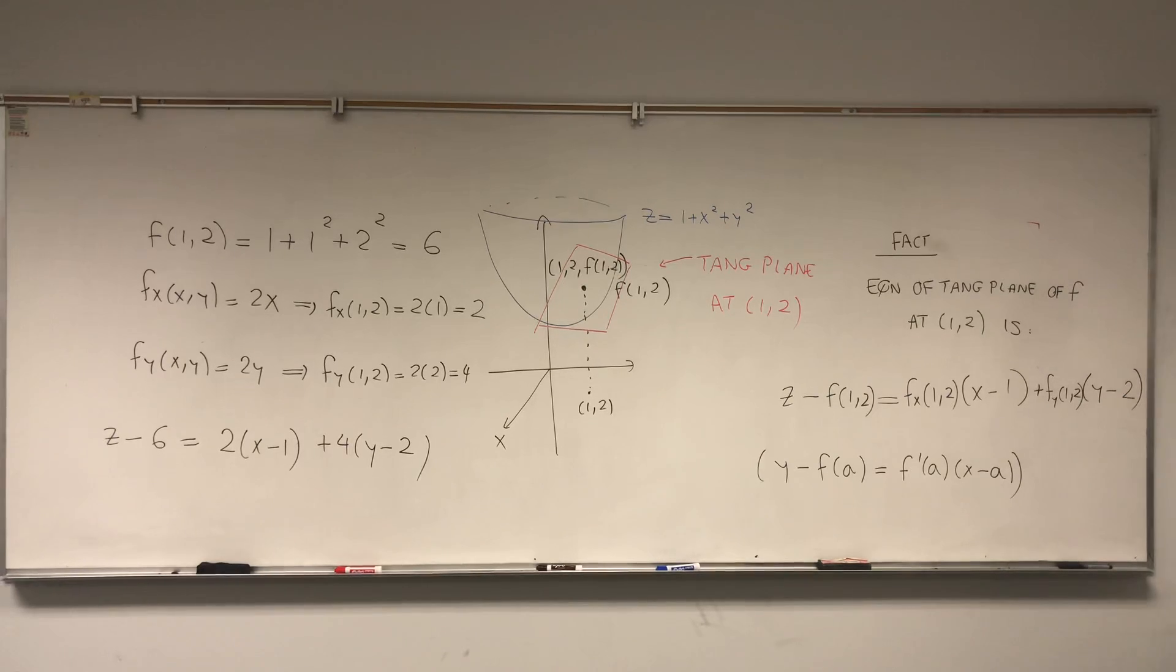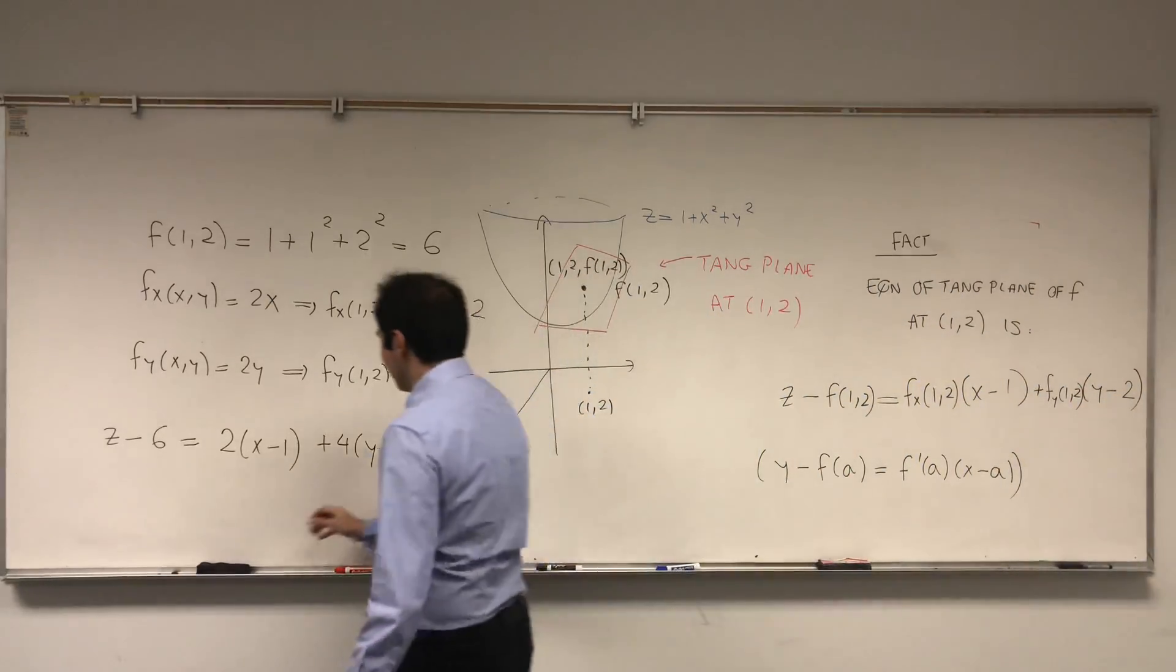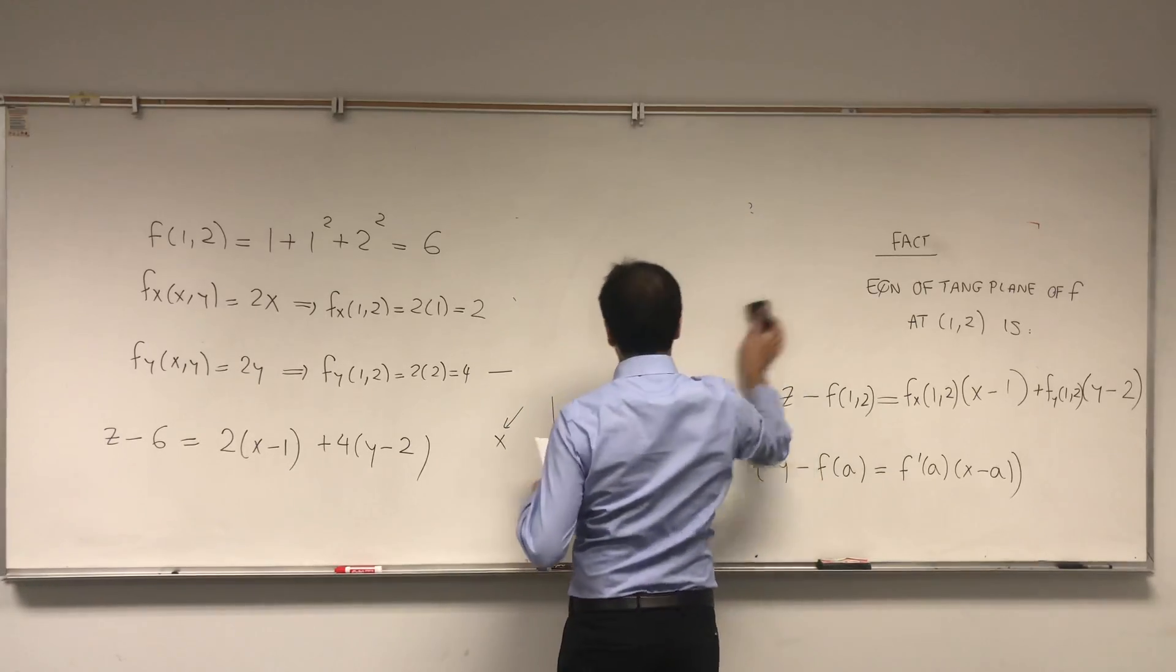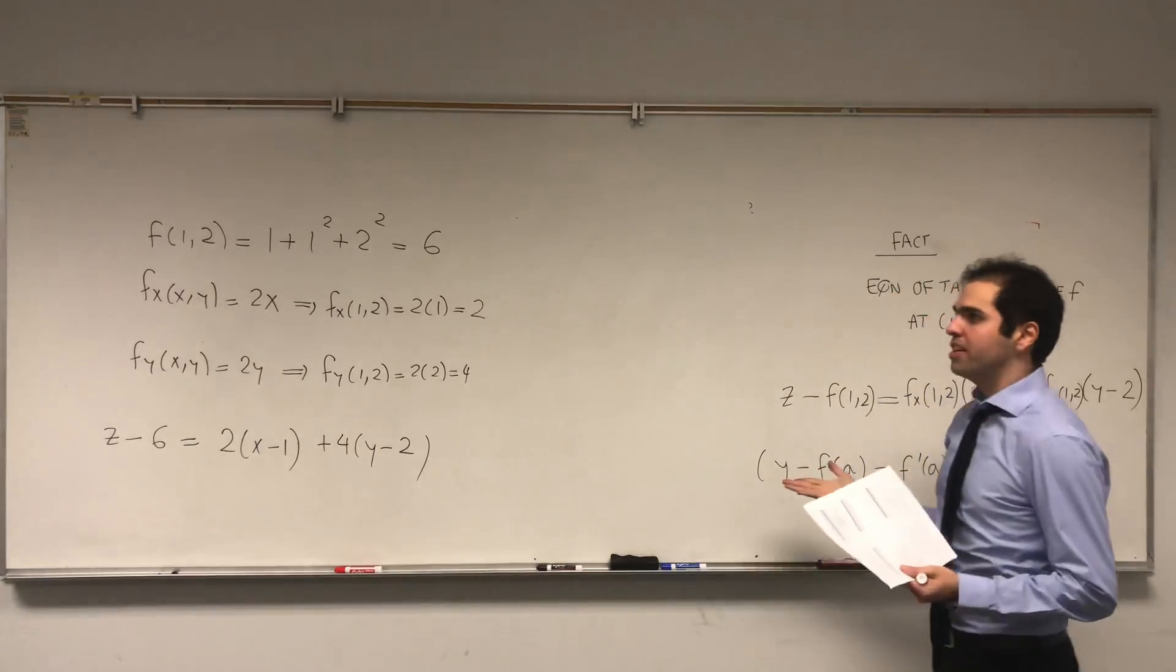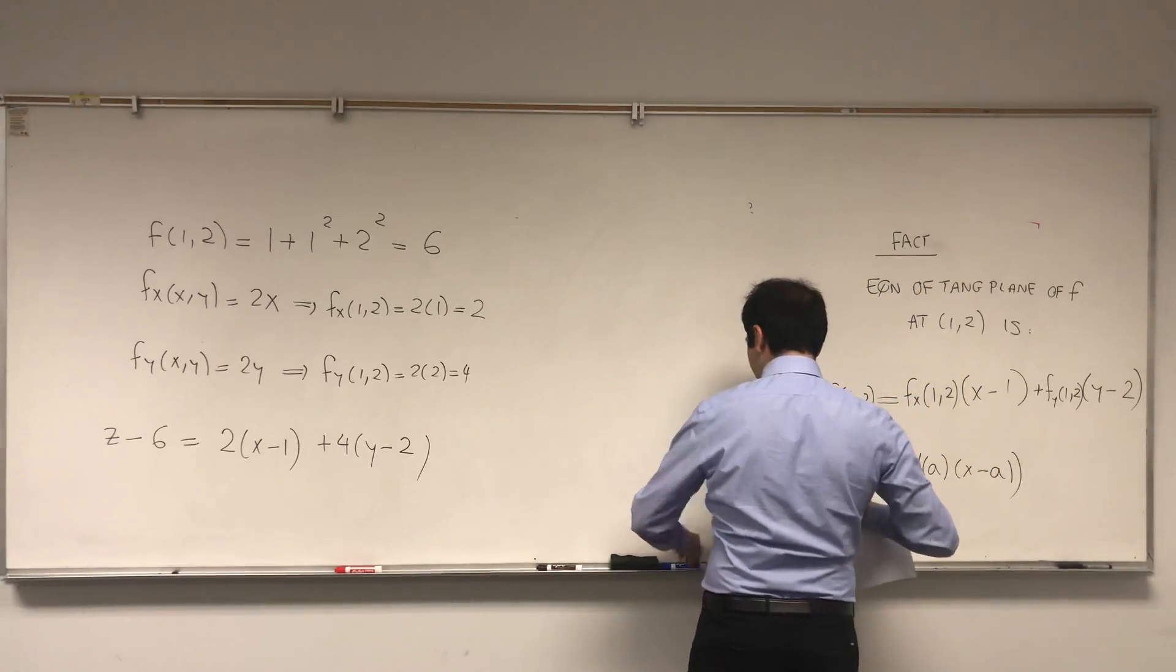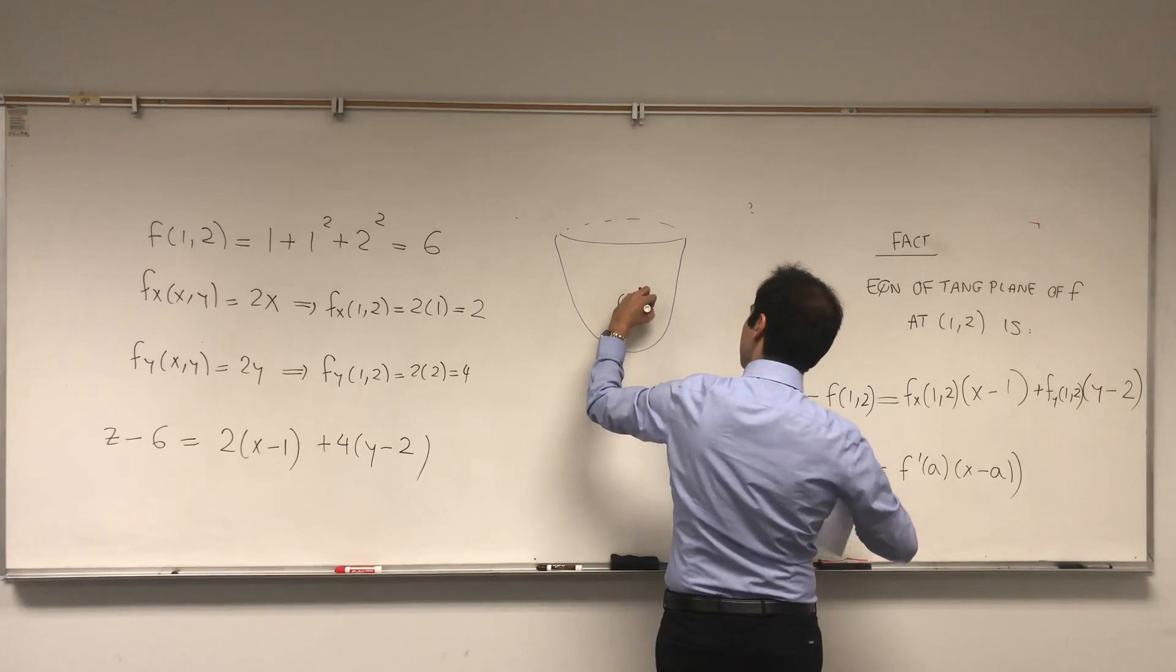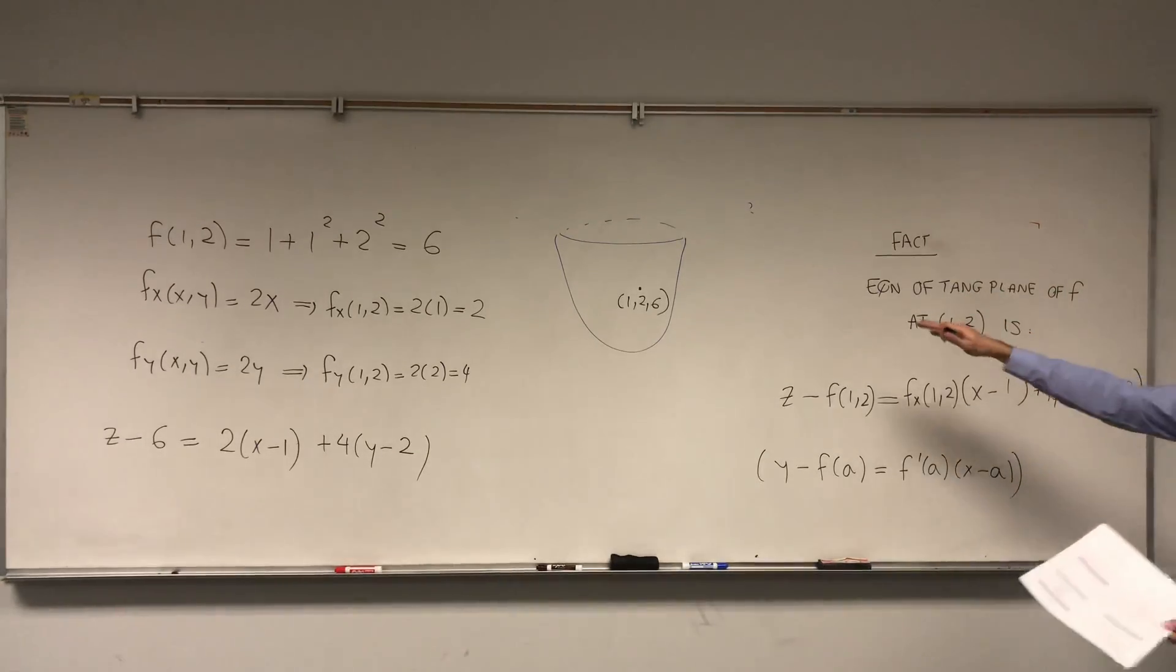So this is how to find the equation of the tangent plane. And now let's just figure out roughly why this is true. I think intuitively it makes sense because remember, we have this interpretation of fx and fy as slopes. So first of all, again, remember we have this function. And we now have the point which we know to be (1, 2, 6).